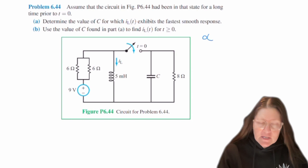So that means that we know that we want an actual alpha equal to omega naught.